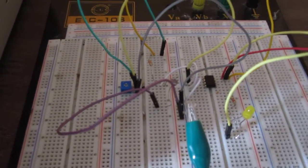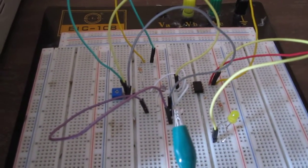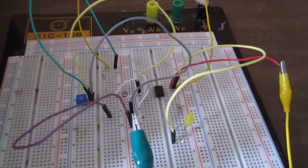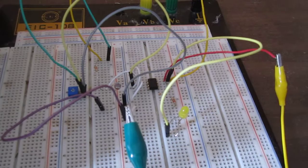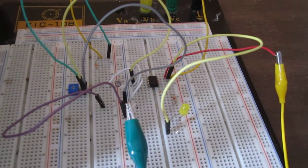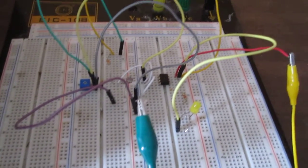We have a potentiometer connected to the non-inverting input. This potentiometer sets the reference voltage to a certain level. Then to the inverted input, we have a 33k ohm resistor in series with the photoresistor. When it's exposed to bright conditions,